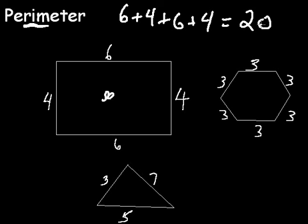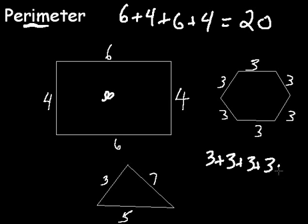I strongly suggest you write it all out. This one we have 3 plus 3 plus 3 plus 3 plus 3 plus 3 — 6 times 3 is 18.